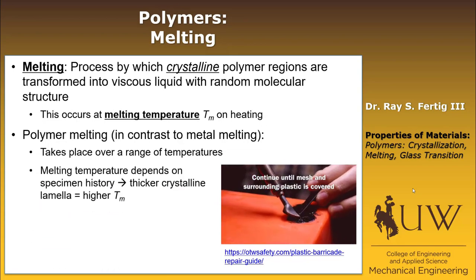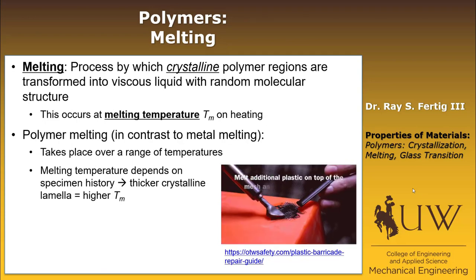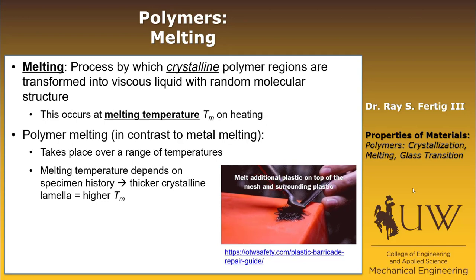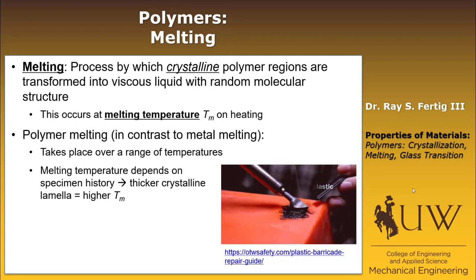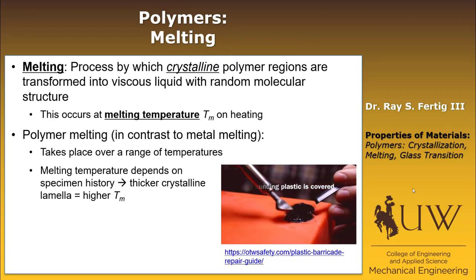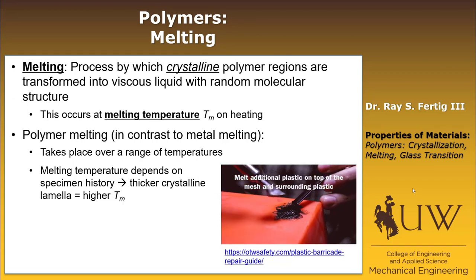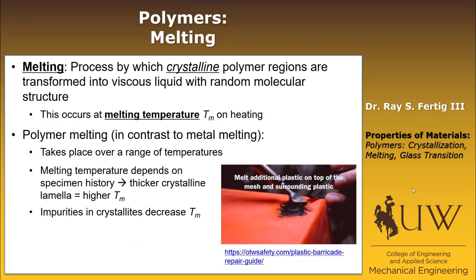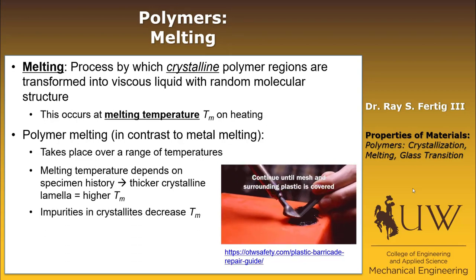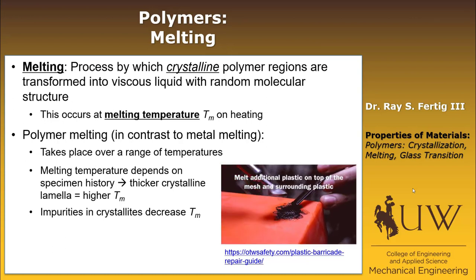Another important thing is that the melting temperature depends on the specimen history — we can't just look at a polymer and know exactly what its melting temperature will be. Thicker crystalline portions, the lamella that form, lead to a higher melting temperature, so the history with which the polymer was formed also affects it. Similarly, any impurities in the crystallites are going to decrease the melting temperature.